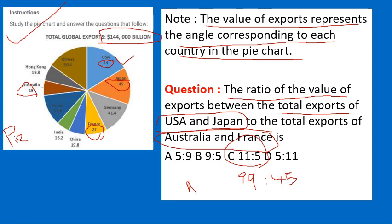Then 99 divided by 45 simplifies — dividing by 9 gives 11 to 5. So the answer is C: 11 is to 5. The key point is the angle ratio equals the total export ratio. Simply add up the angles for each group of countries to get the ratio of total exports.